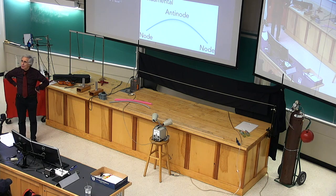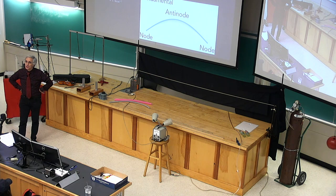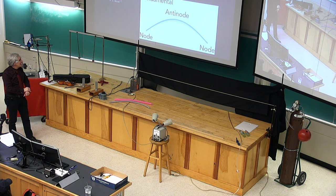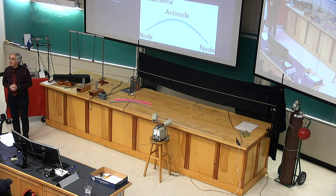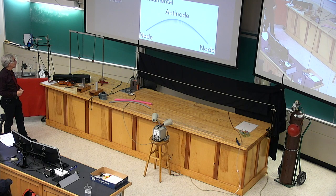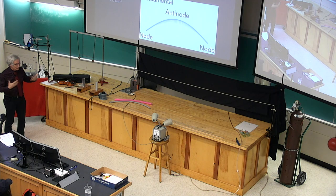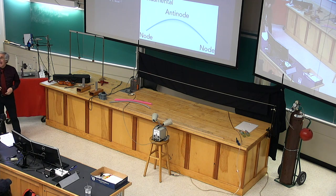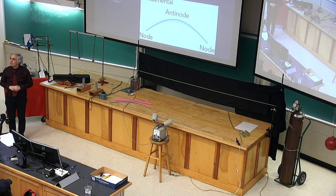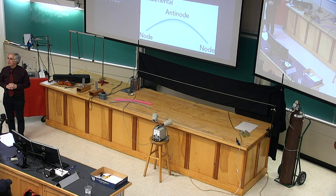There are names for the parts of the motion. The ends of the string, which do not move up and down, are called nodes. The middle that moves the most is called an antinode — the places with the largest overall motion are the antinodes. In the case of the fundamental vibrational mode of a string, there are two nodes at the ends and one antinode in the middle. When you pluck a violin string, this is the main motion that occurs.